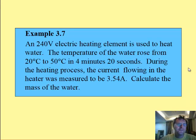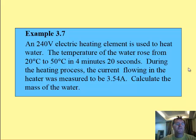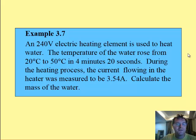A 240 volt electric heating element is used to heat the water. The temperature of the water rose from 20 degrees to 50 degrees in 4 minutes and 20 seconds. During the heating process, the current flowing in the heater was measured to be 3.54 amps. Can we calculate the mass of the water? That's the question this time — the mass of the water.